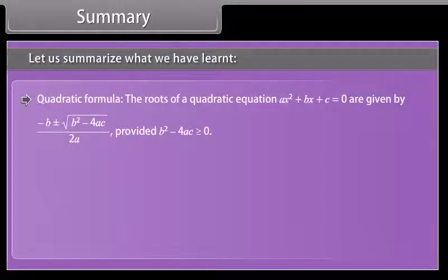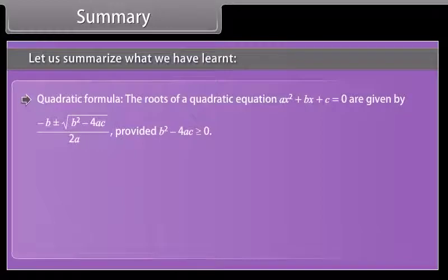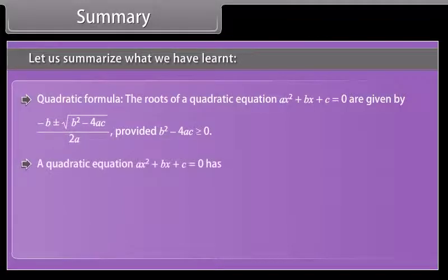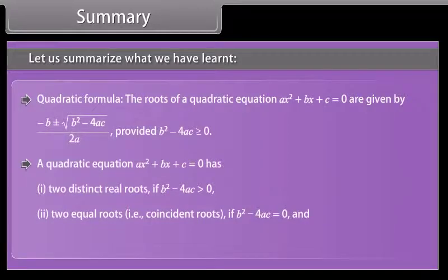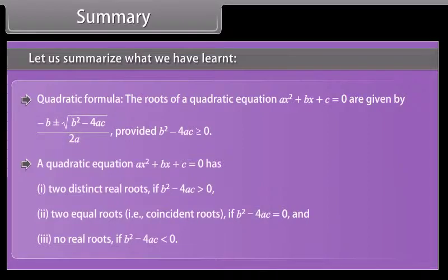The quadratic formula: the roots of ax² + bx + c = 0 are given by x = [−b ± √(b² − 4ac)] / 2a, provided b² − 4ac ≥ 0. A quadratic equation has: (1) two distinct real roots if b² − 4ac > 0; (2) two equal (coincident) roots if b² − 4ac = 0; and (3) no real roots if b² − 4ac < 0.